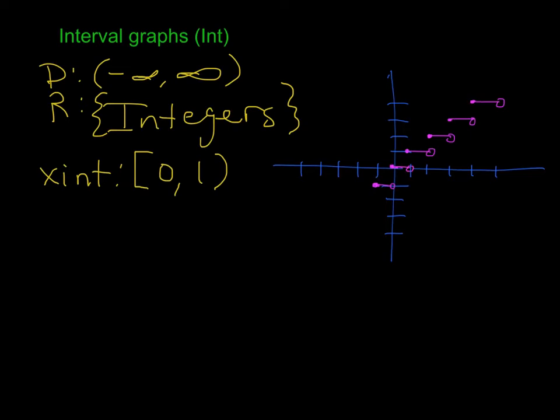And I put a square bracket at 0 because it includes 0, that's that filled-in circle, but when it gets to 1 it pops back up, so it does not include, it gets very close to 1 but doesn't include 1.